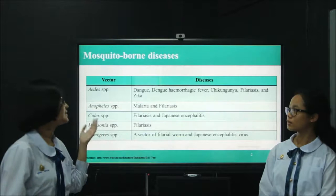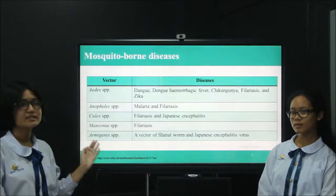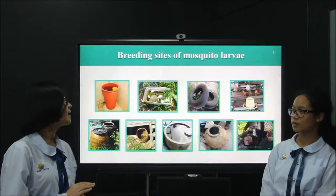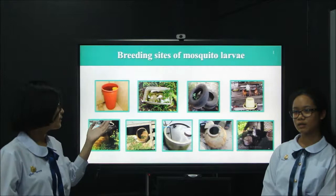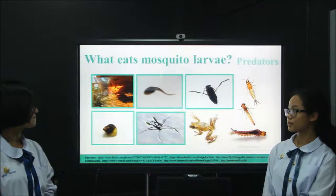Here is the table of diseases and their vectors. We can see that in Thailand we often find Aedes, Mansonia, and Anopheles mosquitoes. Mostly we found the breeding sites of mosquitoes around the house, and we can find many mosquito larvae in many types of containers, as shown in the pictures.